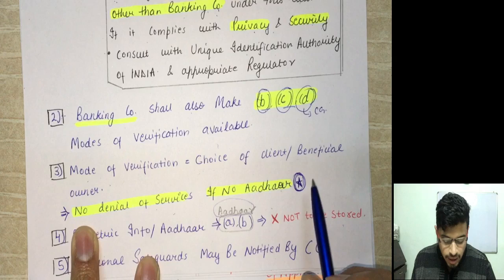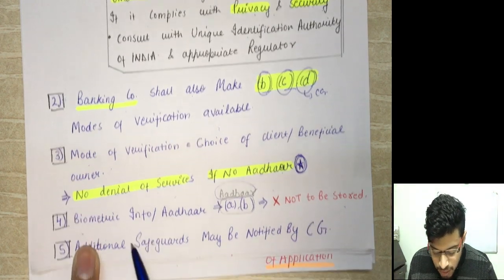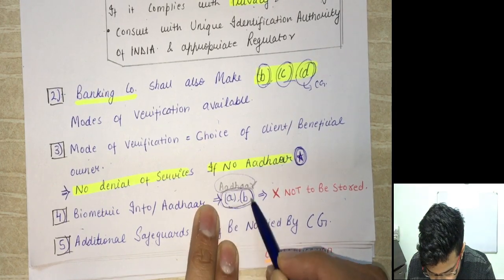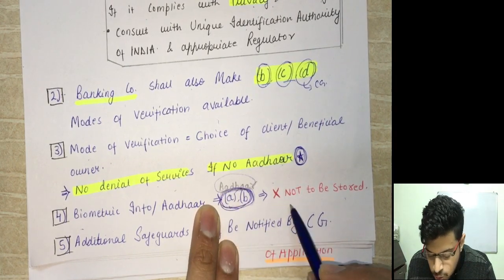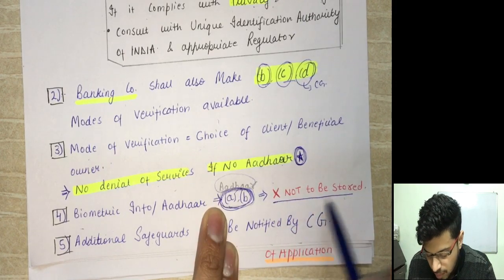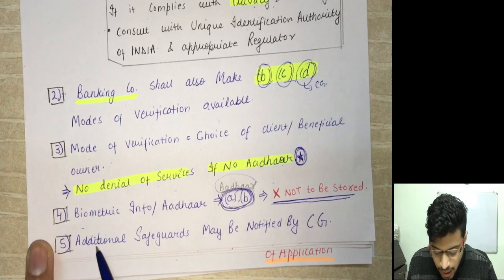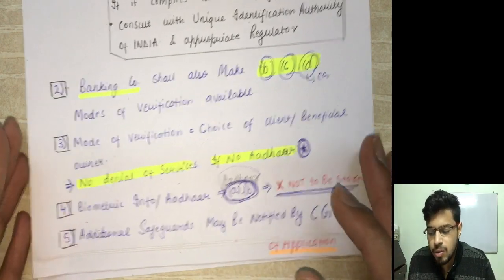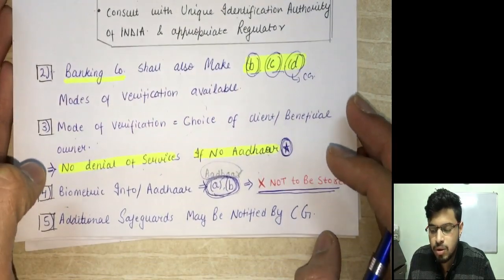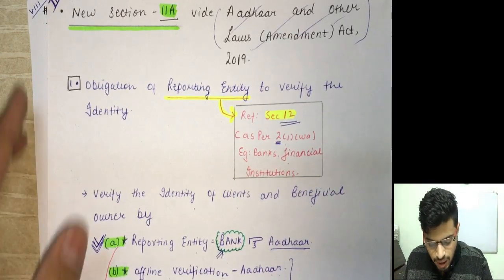The mode of verification is totally the choice of the client or the beneficial owner, and there will be no denial of services if there is no Aadhaar — there was a lot of controversy on this point. Biometric information and Aadhaar information under clauses (a) and (b) shall not be stored by the reporting entity. Additional safeguards may also be notified by the Central Government. This was basically the new section 11A added.